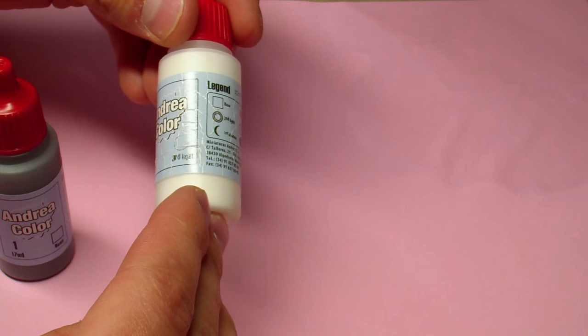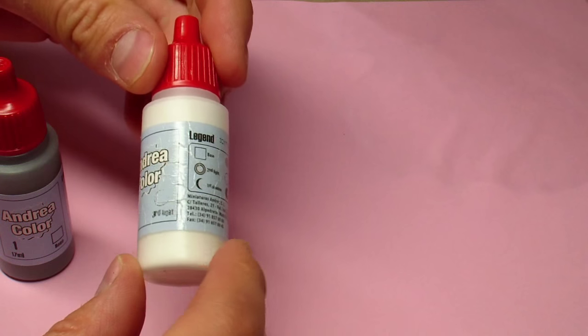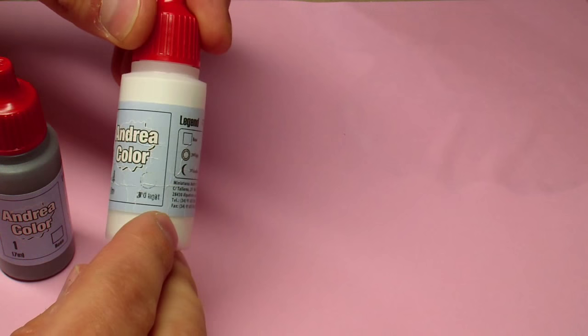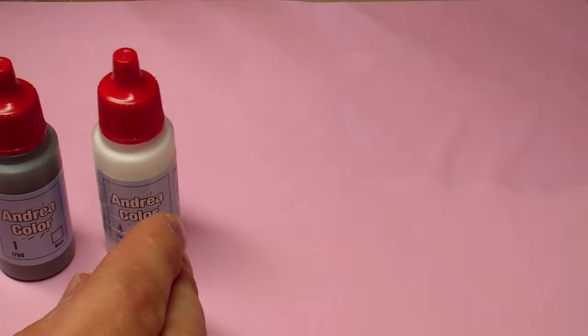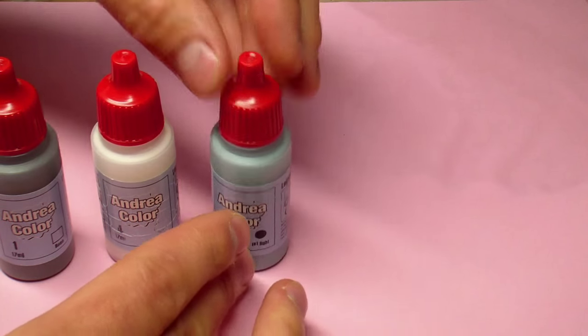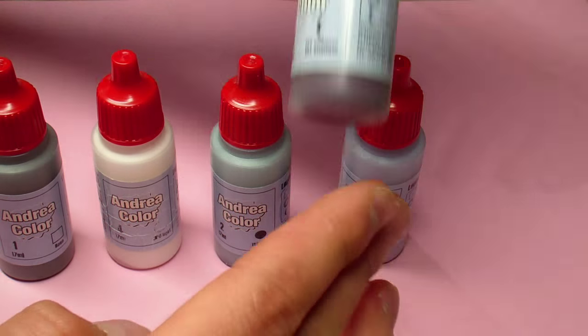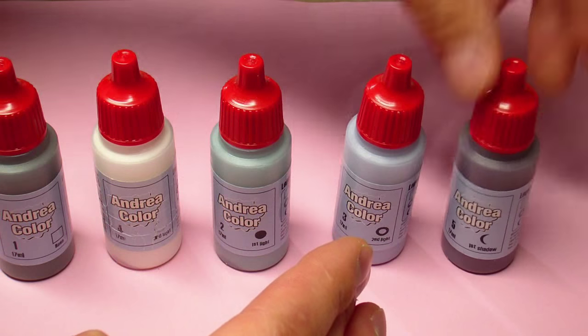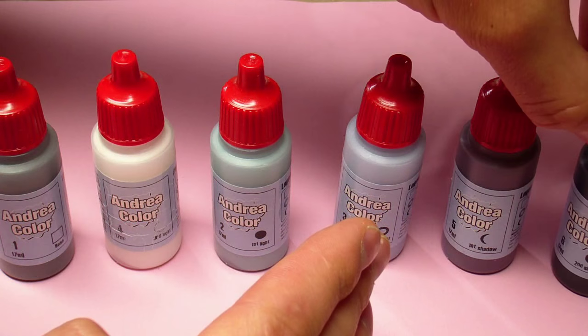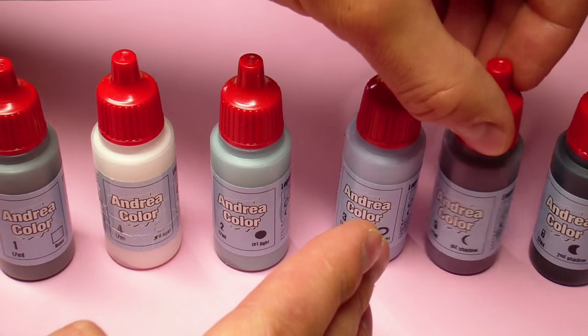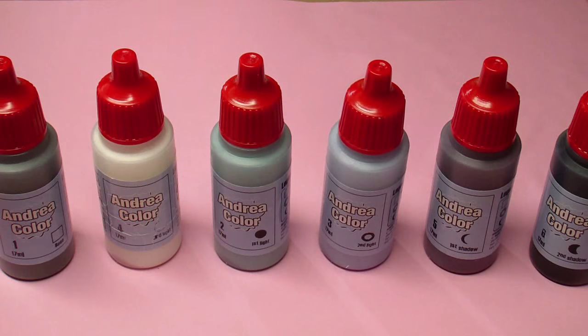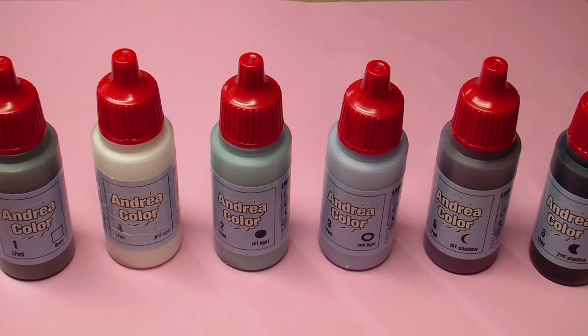Next we have our first highlight with this circle, second highlight, third highlight, first shadow and the second shadow. That is our whole set of paints and using only those six colors we can achieve a true metallic effect.